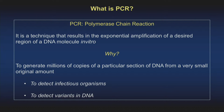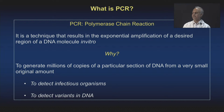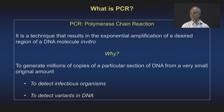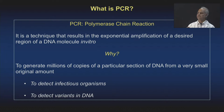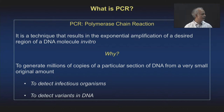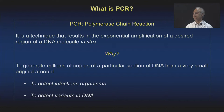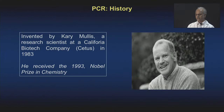What is PCR? PCR is the technique that results in the exponential amplification of a desired region of a DNA molecule in vitro. Why do we need PCR? It is to generate millions of copies of a particular section of DNA from a very small original amount. We amplify it so we can do downstream analysis — for example, to detect various infectious organisms or to detect variants in DNA.